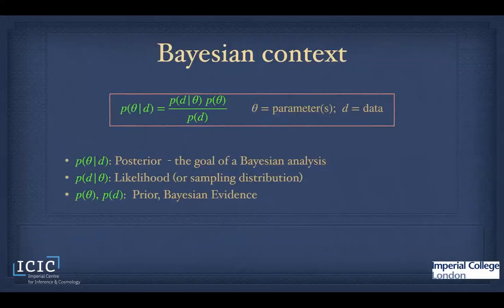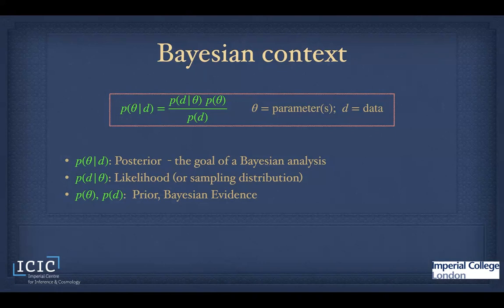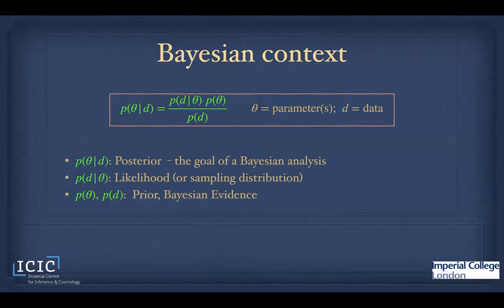Let me put this in a Bayesian context. The question we want to answer is a parameter inference problem. We have a model — Lambda CDM or whatever — with some parameters theta, and we have some data. We want the posterior: given the data and any prior information, what is the probability distribution for the parameters? The posterior involves the likelihood (or sampling distribution) and a prior on the parameters. The Bayesian evidence normalizes this and plays a role if you're comparing different models.